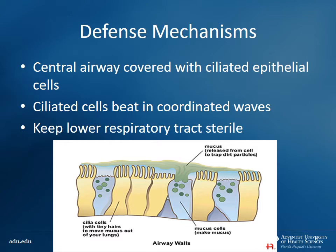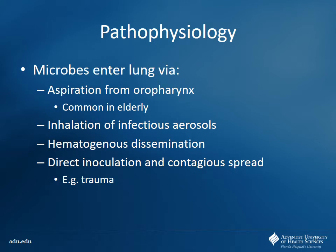Microbes enter via several pathways: aspiration from the oropharynx - gut content can be aspirated into the respiratory tract. This is more common in the elderly because they may not protect their airway as well, especially in late-stage dementias. People who are drunk or on CNS-depressant medications are also at risk. Other entry routes include inhalation of infectious aerosols, hematogenous dissemination, and occasionally direct inoculation from trauma or penetrating injury.